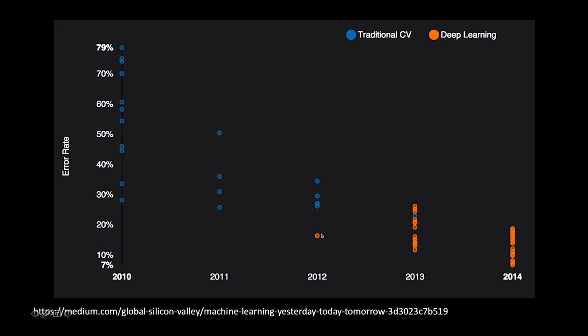That 2012 outlier was a convolutional neural network that really blew the world apart, because everybody had been focused on writing each one of those little feature detectors. Then in 2013 and 2014, everybody pretty much abandoned the traditional feature pieces and started focusing on neural networks. If we had the later data, you'd see the error rates just continuing to plummet.